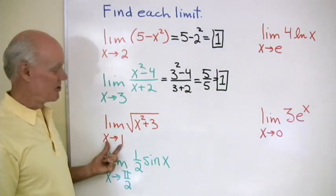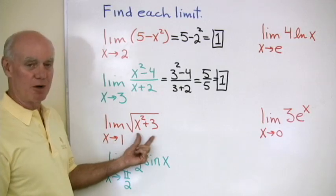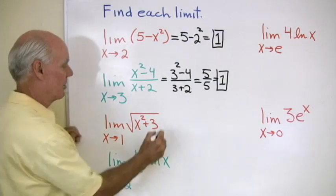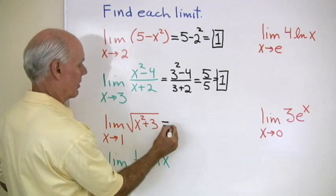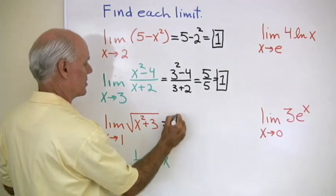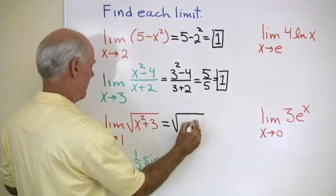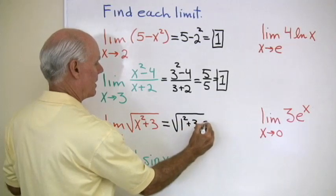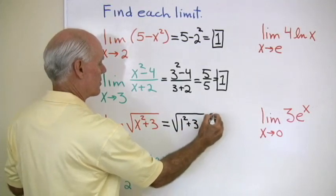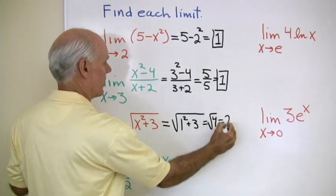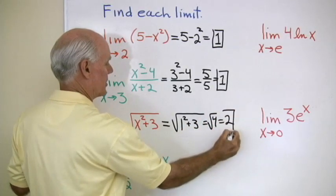How about the limit as x goes to 1 of the square root of x squared plus 3? This is defined when x equals 1, so it's one of my root functions. This will just be the square root of 1 squared plus 3. That will be the square root of 4, which comes out to be 2.